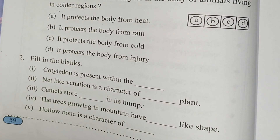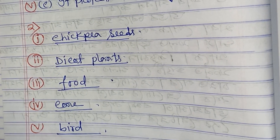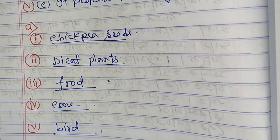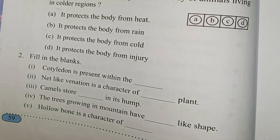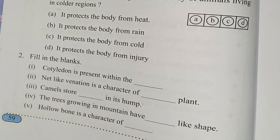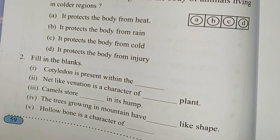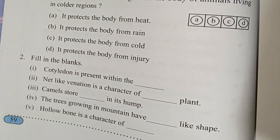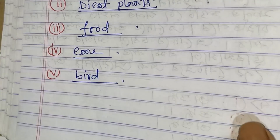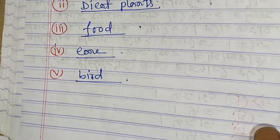Trees growing in mountains have a cone shape. Number five: Hollow bone is a character of birds. Answer: Birds.